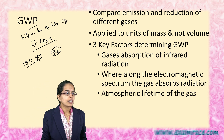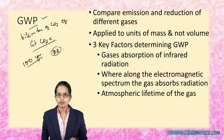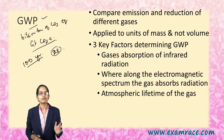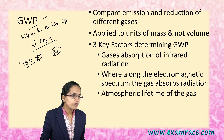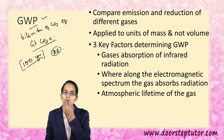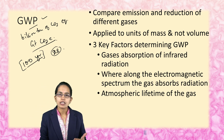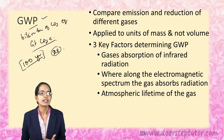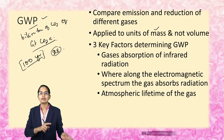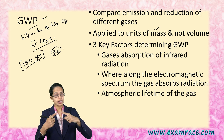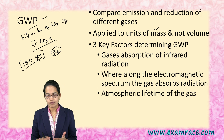When we are trying to understand global warming potential, there are certain things we keep in mind. It's either taken for a period of 20 years, 100 years, or 500 years. But the most standard form is the 100 years. The next important thing is this global warming potential is applied to the unit of masses, not volume. And we are trying to compare and reduce the emissions of different gases based on the potentials that we have.